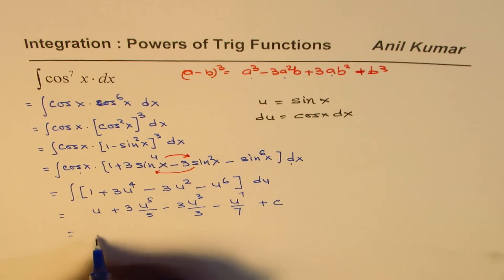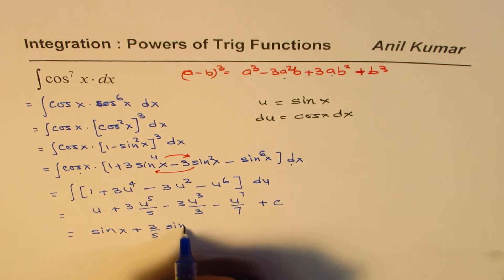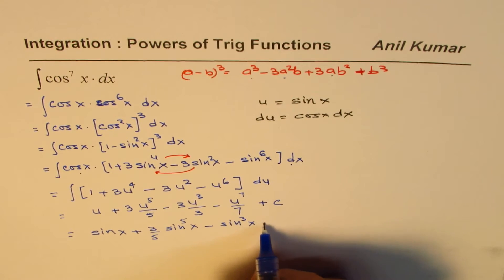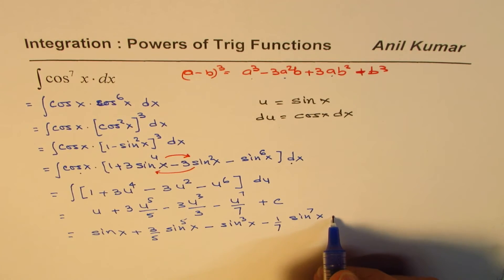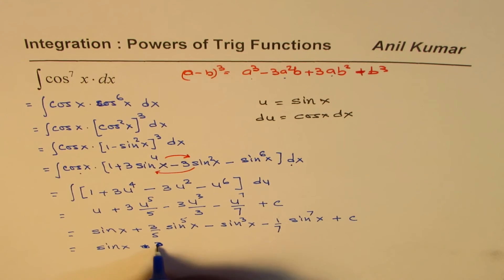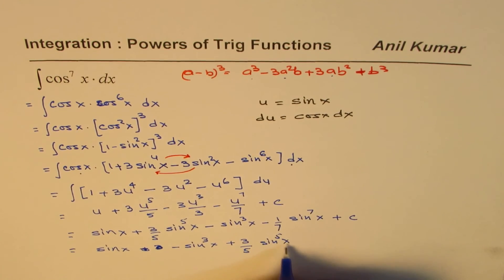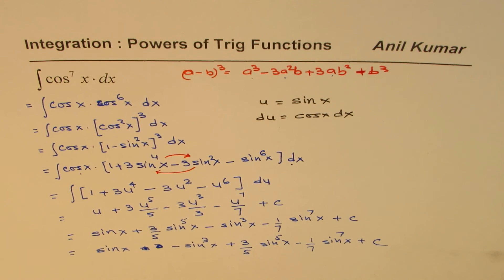Now we can replace u with sine x. So we get sine x, 3 over 5 sine to the power of 5x, minus sine cube x, and minus 1 over 7 sine to the power of 7x plus c. So it is good to rearrange them and write down the final answer. We will write sine x minus sine cube x plus 3 over 5 sine to the power of 5x minus 1 over 7 sine to the power of 7x plus c. So that is how you can find the integral of the given function. I hope that helps. Thank you and all the best.